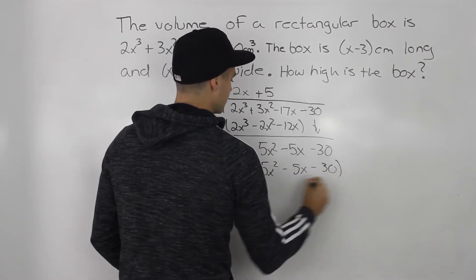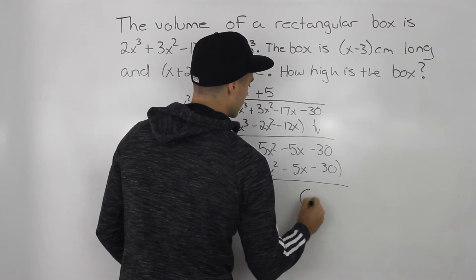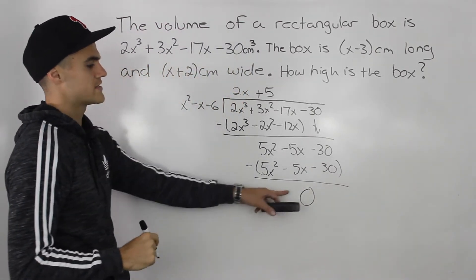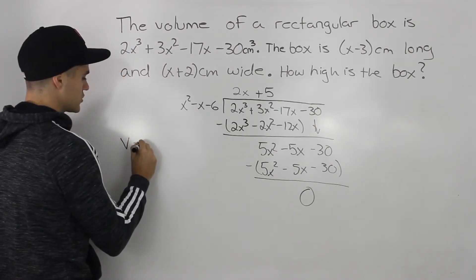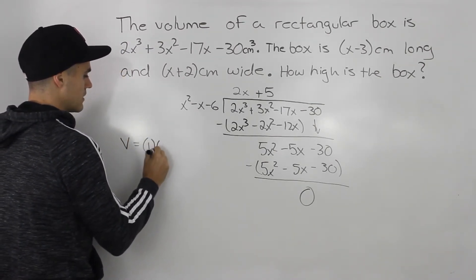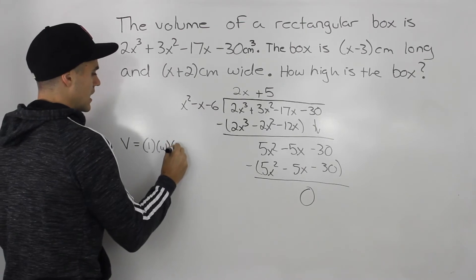Subtract these. 0 remainder. And you should always get a 0 remainder, right? Because the expression we had originally was volume equals length times width times height.